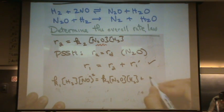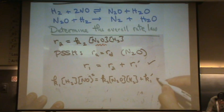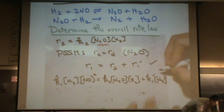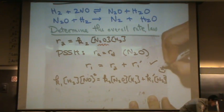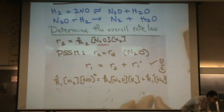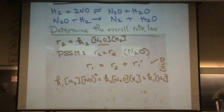And then rate one reverse is K1 reverse, N2O, and I kind of got to go uphill here, H times H2O. Now, let's take a look at this little or big equation we just wrote down.